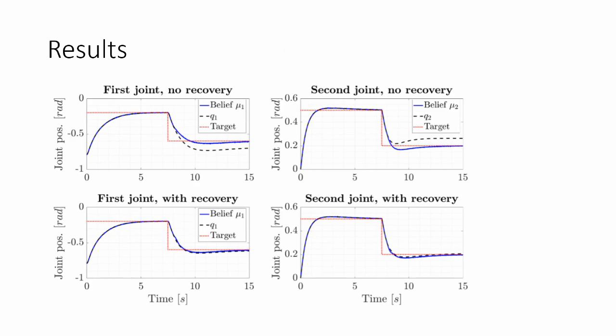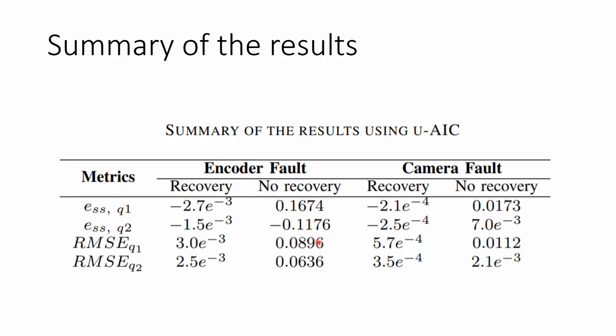We also have a table with more results. And here we can see something critical, which is since our encoders are more accurate, when the encoder fault occurs, the error is much bigger than when the camera fault occurs. But with this scheme, we can deal easily with encoder faults with position or velocity or camera faults in the exact same fashion, unlike previous work which could only deal with encoder faults and not camera faults.